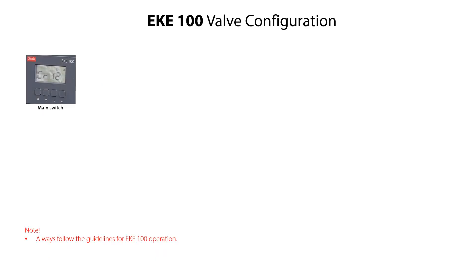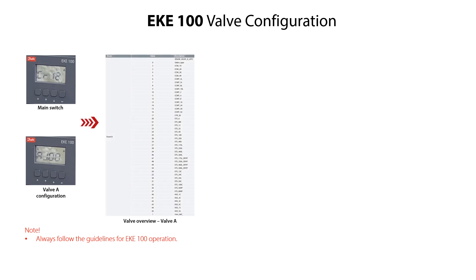To do an EKE100 valve A configuration by selecting a suitable stepper motor valve, from the main switch CR12 mode, press the arrow down key several times to access the valve A configuration, specified as AJ00. Press the enter key to access the available valves. You can see the different suitable valves and related values in the overview shown here. Press the arrow up or arrow down keys to find and select a suitable valve, then press the enter key to confirm and return to the AJ00 mode. Once valve A is selected, press the arrow up key to return to the CR12 mode.